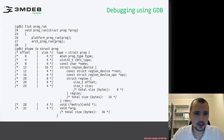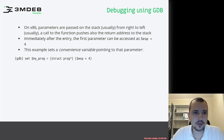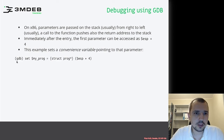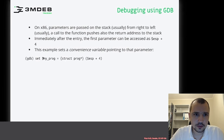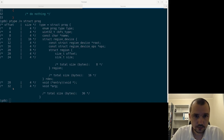Let's think about how we can use that information to calculate the new stage address. On x86, parameters are passed on the stack from right to left, and a call to a function also pushes the return address onto the stack. So immediately after entry, the first parameter can be accessed using stack pointer plus 4. This example sets a convenience variable which we can leverage through some calculation in GDB. Let's set that to point to our struct prog.